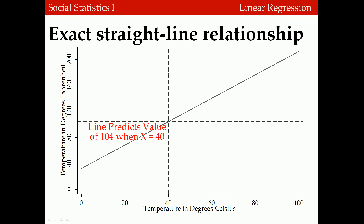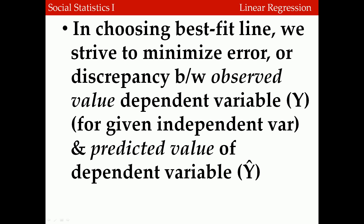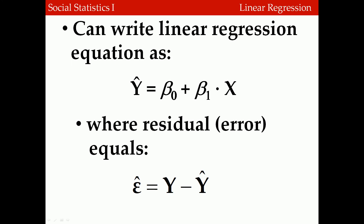In the social sciences, we rarely find perfect associations. We strive to minimize error — the discrepancy between the observed values of the dependent variable y and the predicted values y-hat. The linear regression equation states: y-hat equals beta 0 (intercept) plus beta 1 (slope) times x. We can also define the residual or error, symbolized as epsilon-hat, as the actual value of the dependent variable minus the predicted value y-hat.